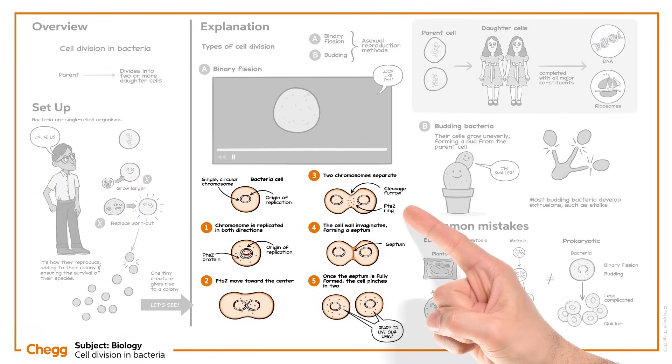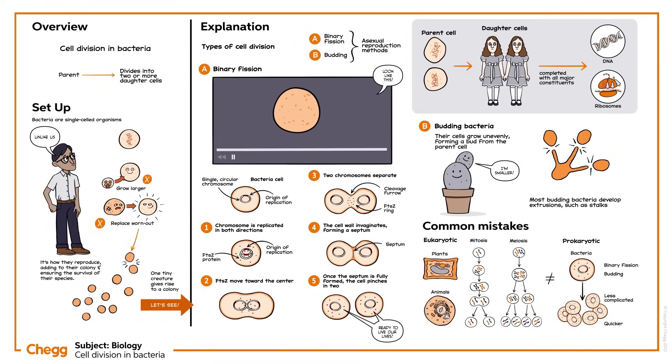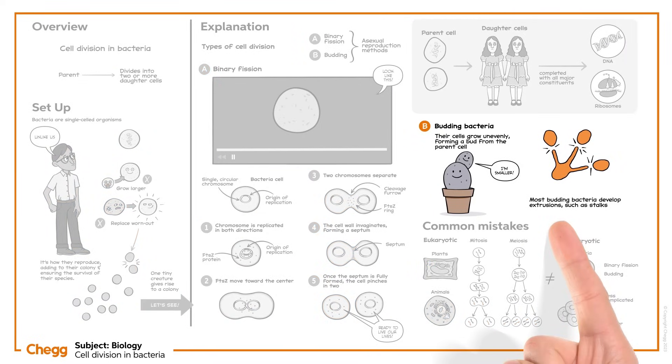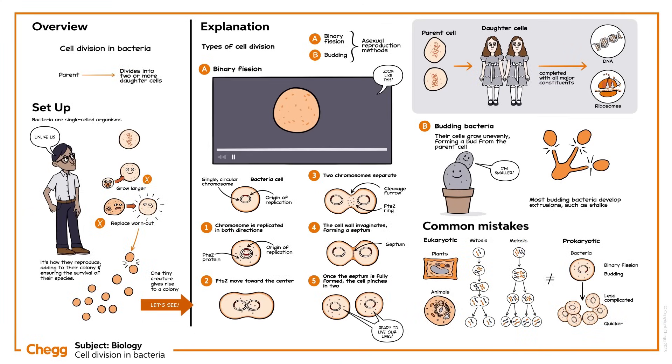Today we have learnt about two different ways bacteria can reproduce. Binary fission, the most common method, and budding, a method used by budding bacteria. Hopefully you now have a better understanding of how tiny bacteria divide and create their world.